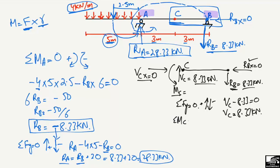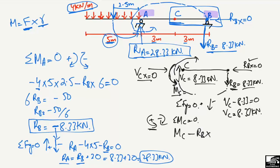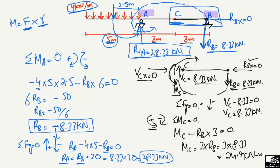To find MC, take the summation of moments at point C equal to zero, with anti-clockwise moments positive and clockwise moments negative. MC acts anti-clockwise (positive). RB creates a clockwise moment about C (negative): minus RB multiplied by the moment arm, which is the distance from B to C = 3 meters. So: MC = 3 × 8.33 = 24.9 kN·m.